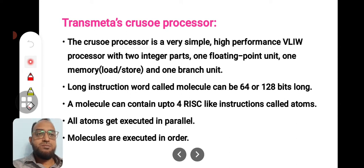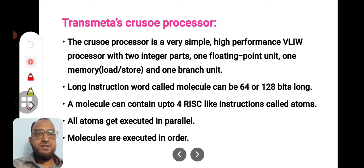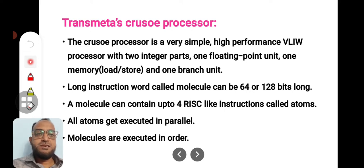The VLIW processor has two integer parts, one floating point unit, one memory load/store unit, and one branch unit. Its instruction is divided into two integer parts, one floating point unit, one memory load/store unit, and one branch unit — forming a four-part long instruction word.